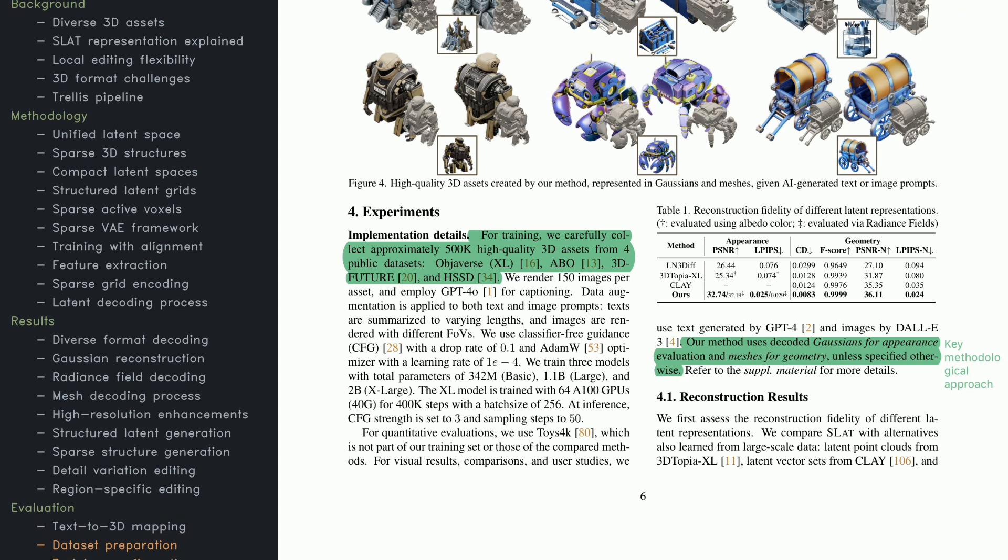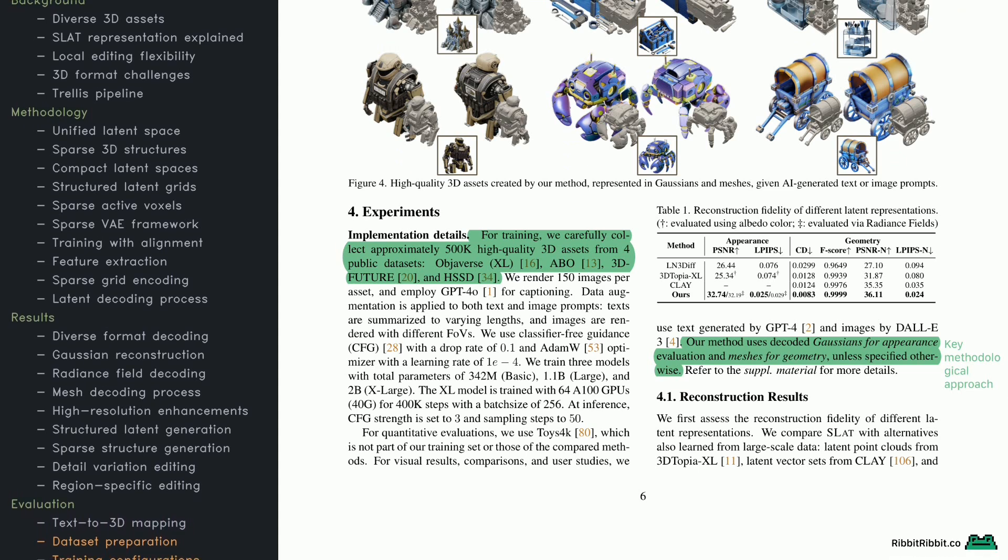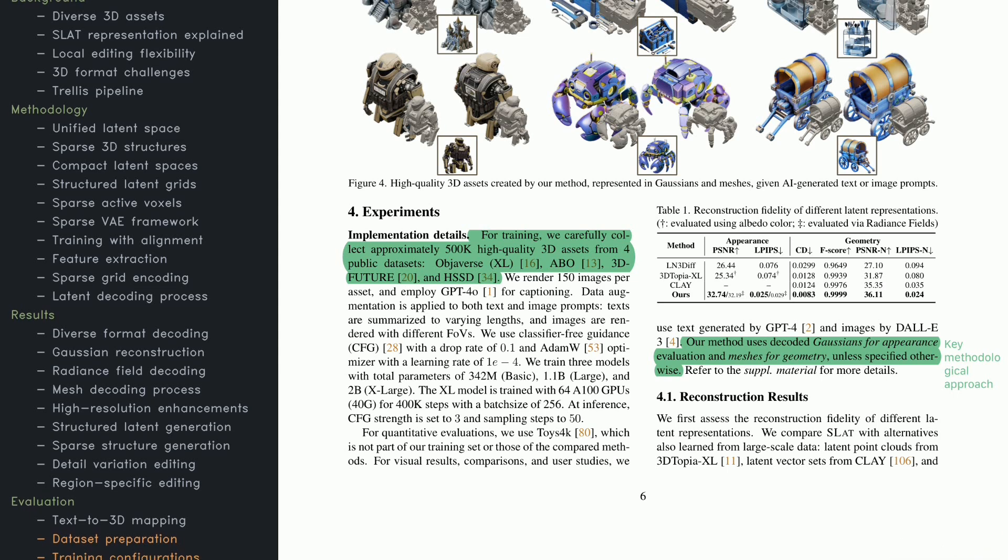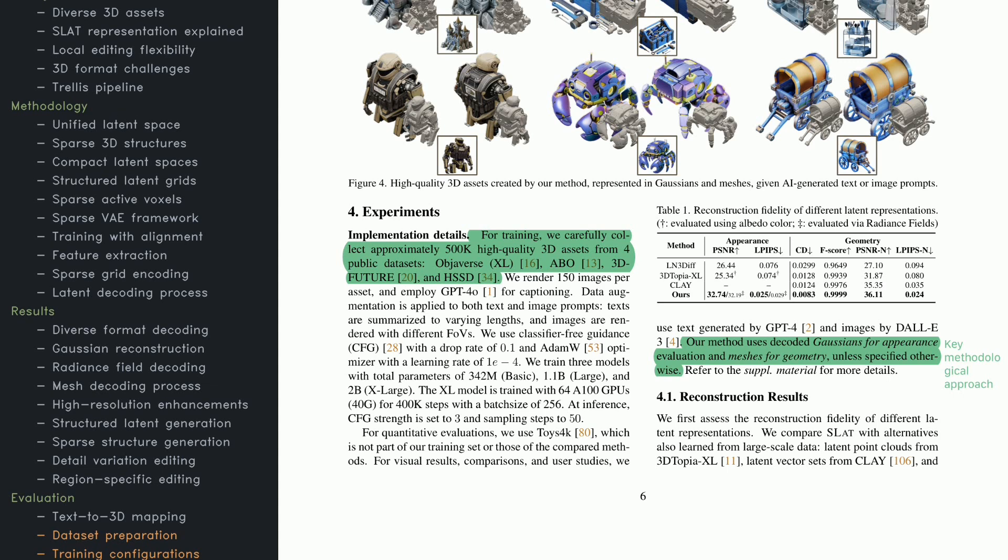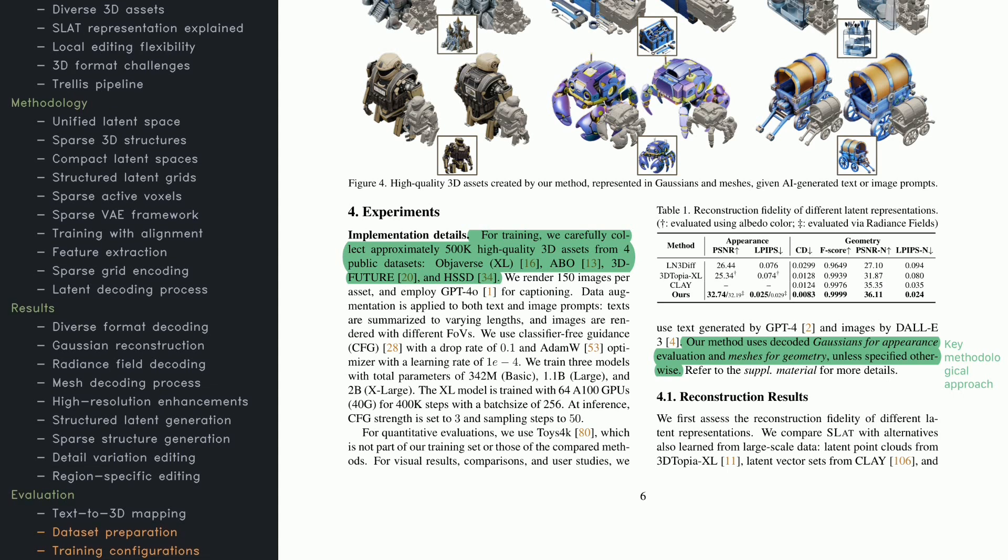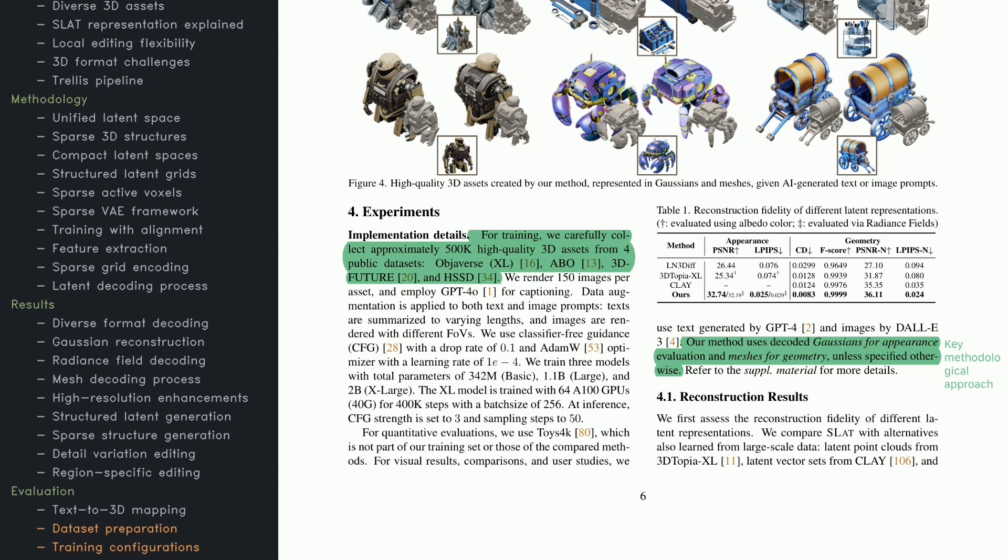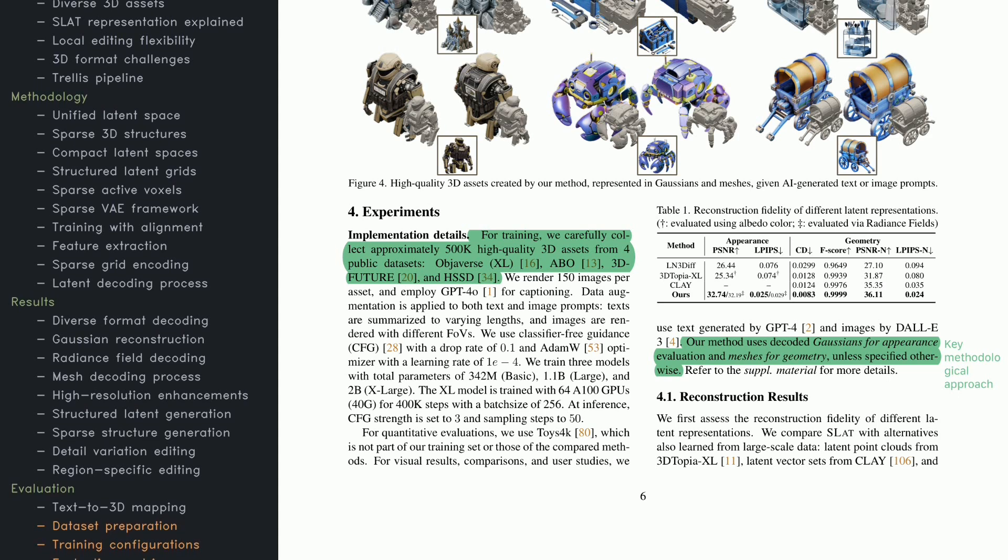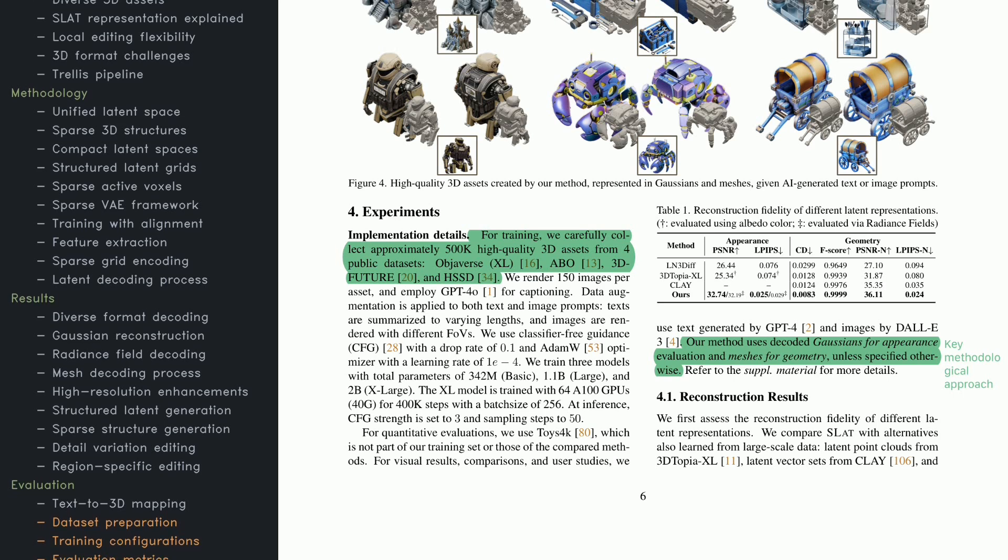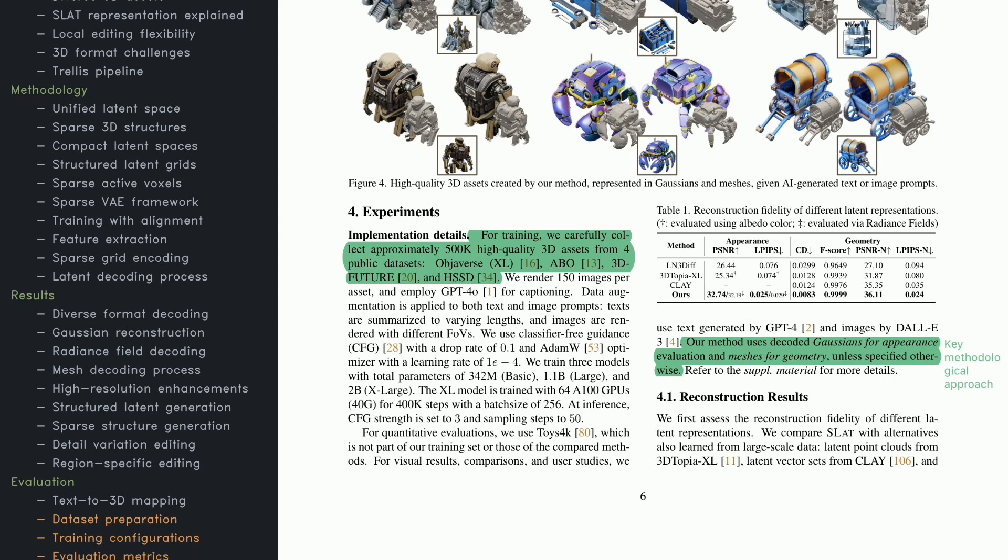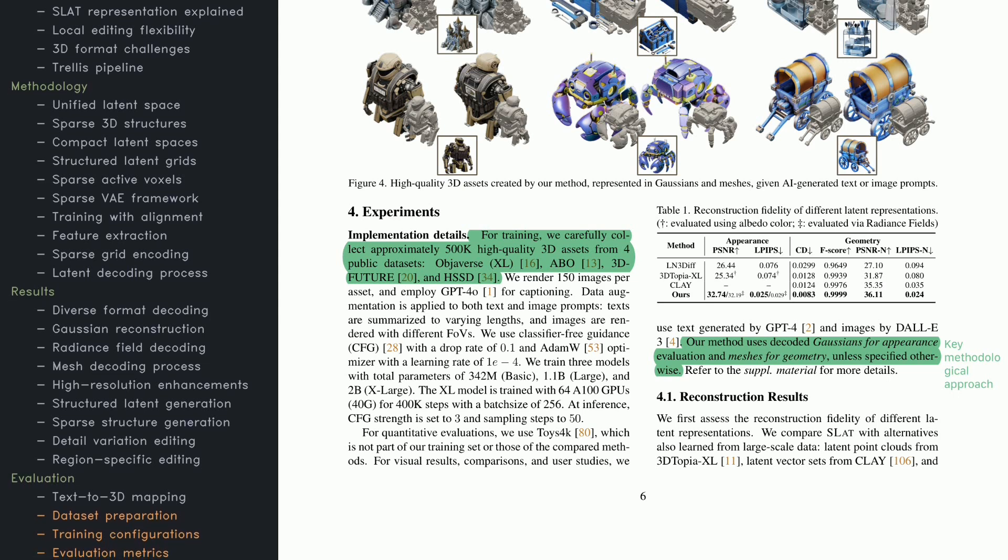Let's look at how the model was trained and evaluated. The team assembled a massive data set of around 500,000 3D assets, complete with captions from GPT-4 and images generated by DALL-E. Various text prompts help the model learn a wide range of object types. They trained different model sizes: basic, large, and extra-large, using a lot of GPU power for the biggest one. Quantitative metrics show strong reconstruction and geometry alignment, especially when using Gaussian-based decoders for appearance and mesh-based decoders for shape.